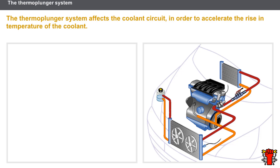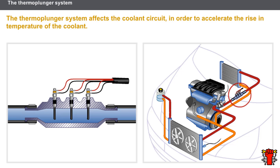To re-establish an efficient heating service, the engine coolant circuit is fitted with a heating device called a thermo plunger system. The thermo plunger system is principally made up of a water unit including several heating resistors, several relays, and a control unit.